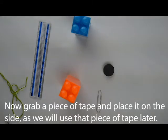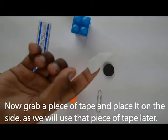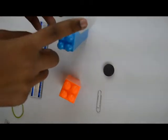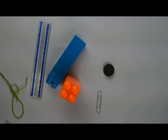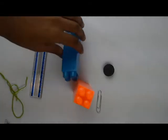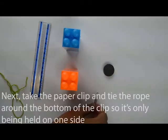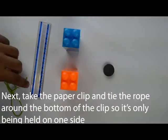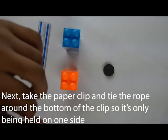Now grab a piece of tape and gently place it on the side temporarily, as we will use that piece of tape later. Next, take the paper clip and gently tie the rope around the bottom of the paper clip.